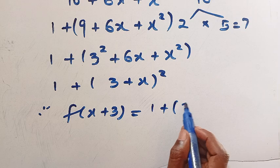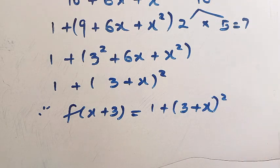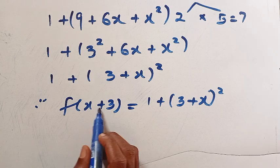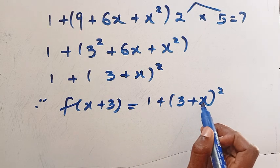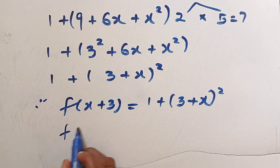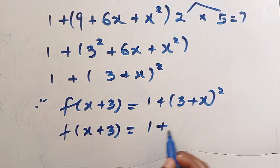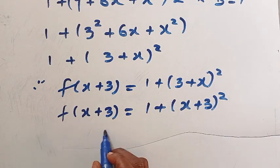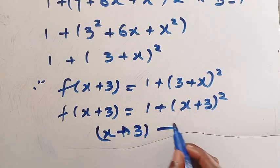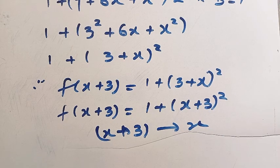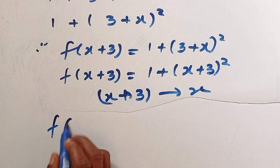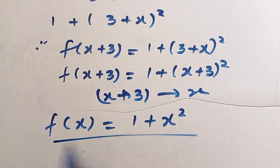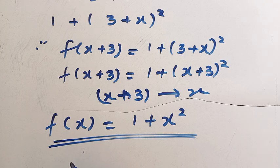The method I'm applying here is called form manipulation. Just by changing the whole of x plus 3: since we have (3 plus x) and this is (x plus 3), both are commutative, so we write it as 1 plus (x plus 3) raised to the power of 2. These two are the same. Then we change x plus 3, which is the domain, to x throughout — so we get f(x) equals 1 plus x squared.